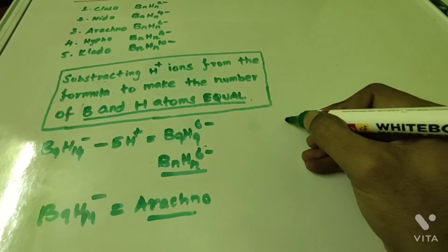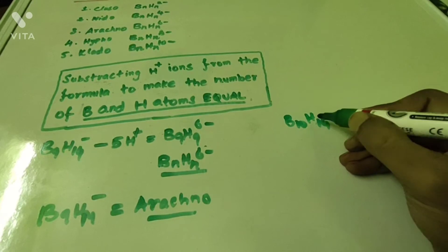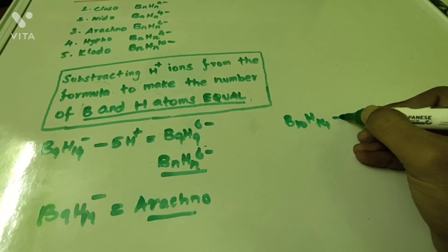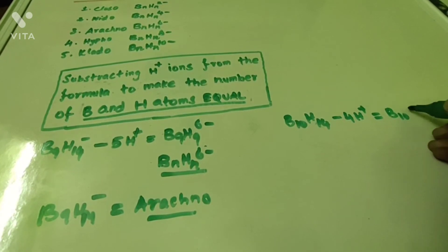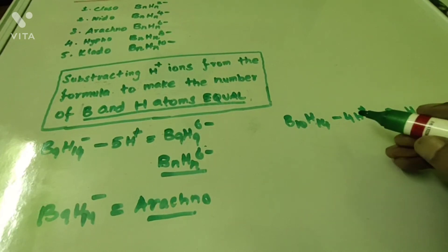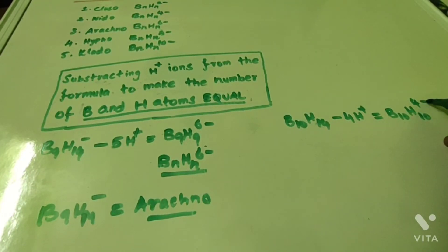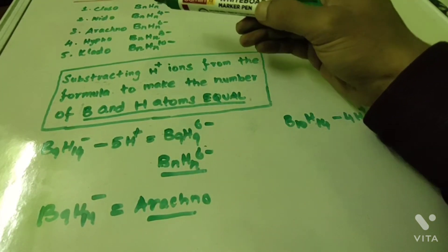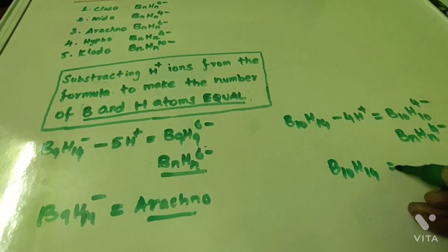Now I am going to take one more example: B₁₀H₁₄. In this formula, 4 hydrogen atoms are in excess compared to boron. Therefore, I am going to subtract 4 H⁺ ions. The formula will become B₁₀H₁₀, and the formal charge on this cluster compound is 4 minus, since 4 hydrogen atoms were removed. This formula is also represented as BnHn⁴⁻. BnHn⁴⁻ is a Nido compound. Therefore, B₁₀H₁₄ is a Nido compound.